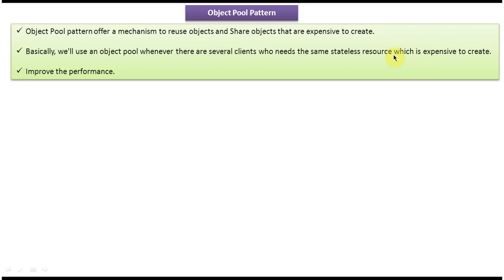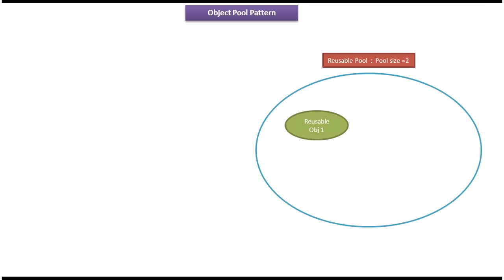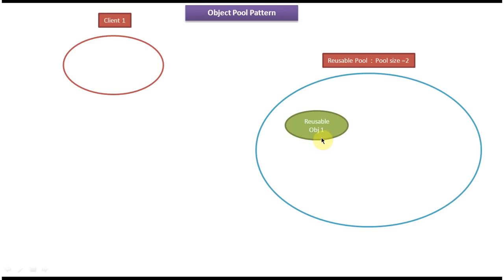So how do we share among clients? There are three important objects in the object pool pattern: one is the reusable object, another one is the client, and another one is the reusable pool. The reusable object is nothing but an expensive object — creating this expensive object is a little bit difficult and it will occupy more memory.